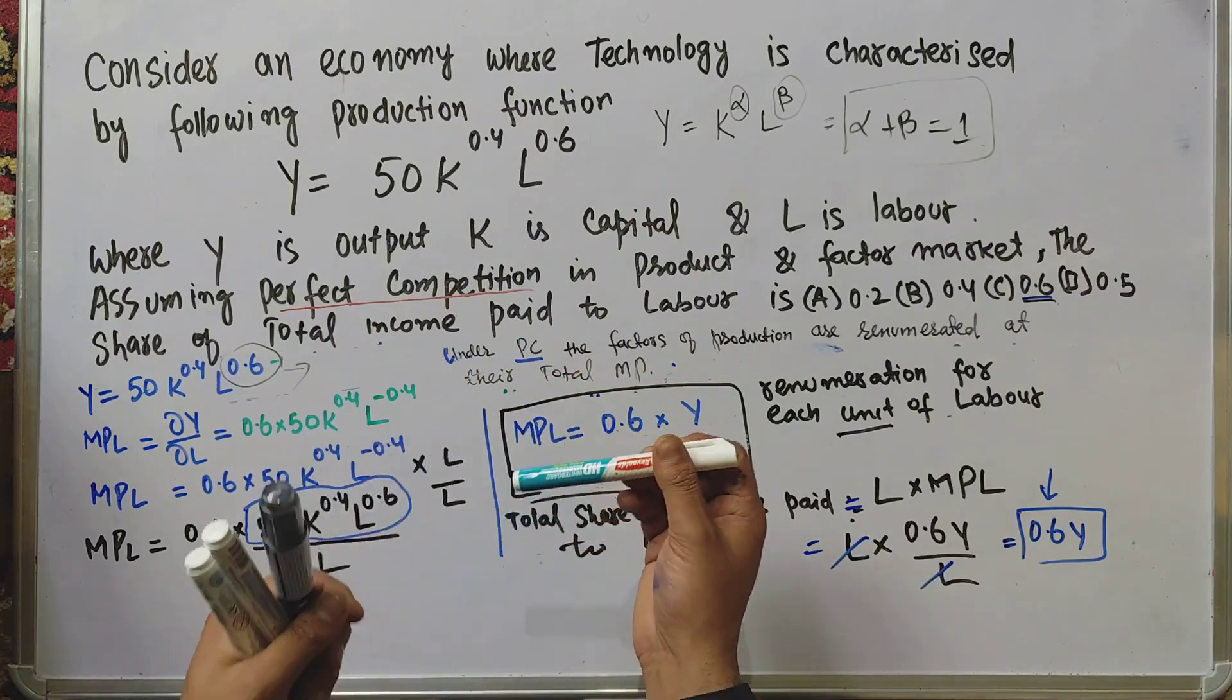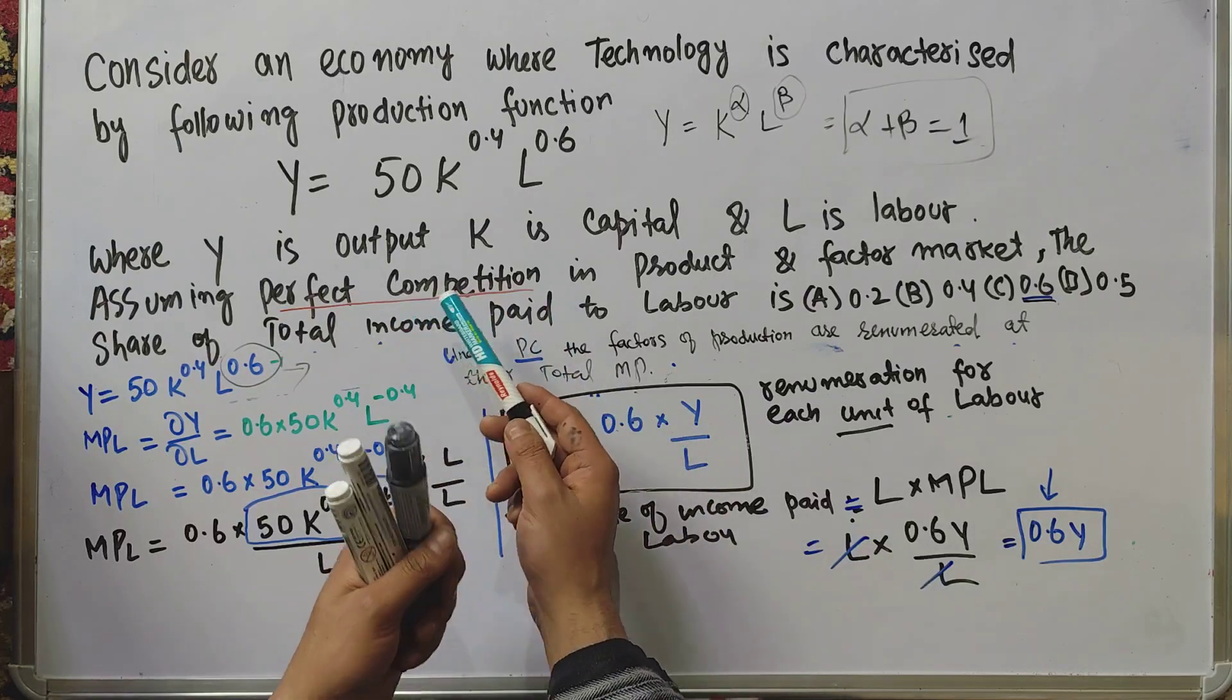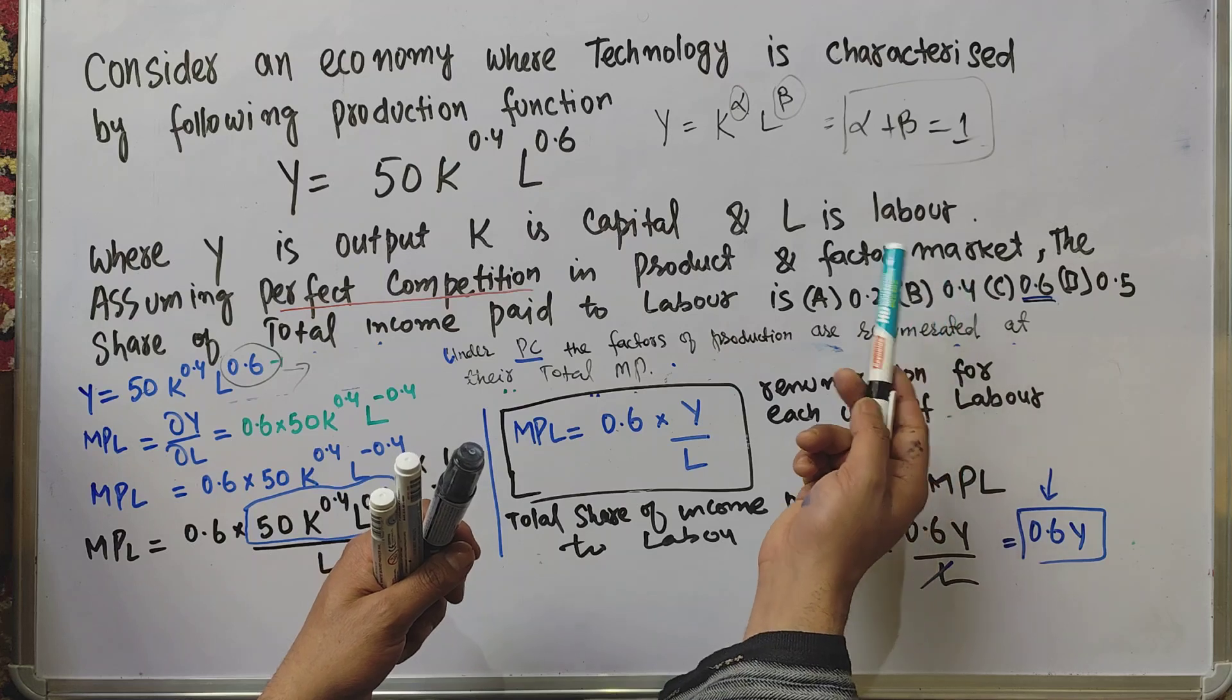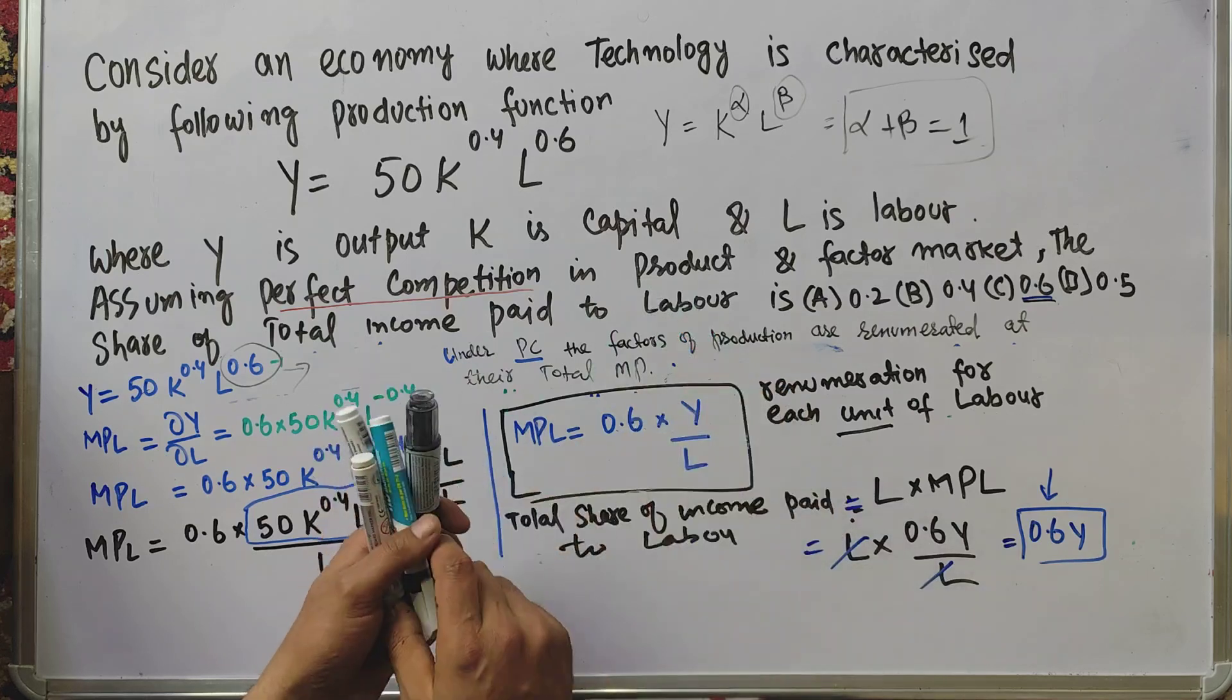We assume perfect competition in both product and factor markets. We need to find out the share of total income paid to labor.